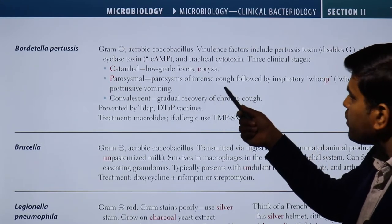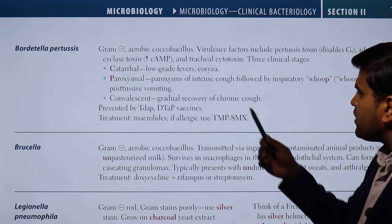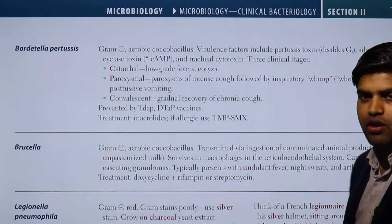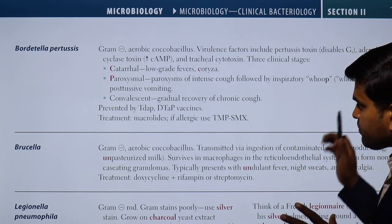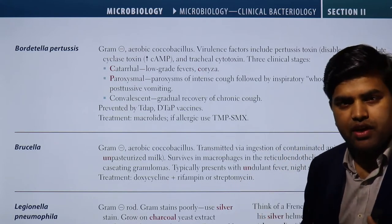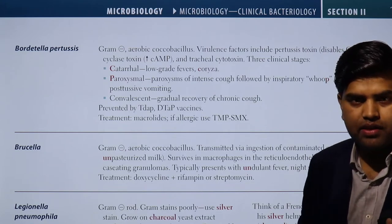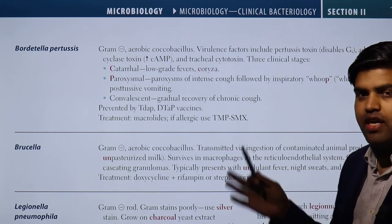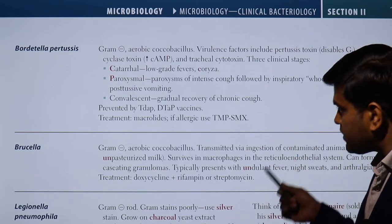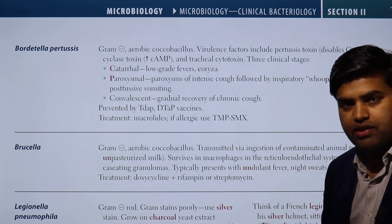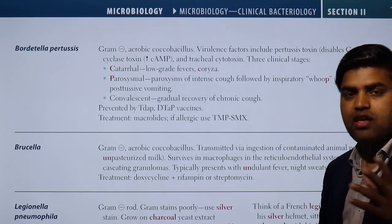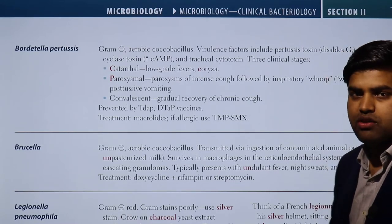In the catarrhal stage they have low-grade fever and coryza. In the paroxysmal stage there is a paroxysm of intense cough followed by the inspiratory whoop known as the whooping cough, followed by post-tussive vomiting. This is a classical bacteria responsible for whooping cough, which was very common in the early days before vaccination. After vaccination this disease has been reduced at a very high level, and you can see very few cases, but those people who are not vaccinated will develop this infection with Bordetella pertussis.